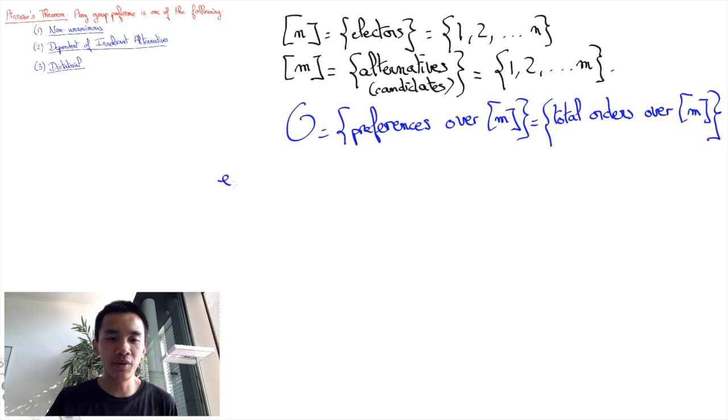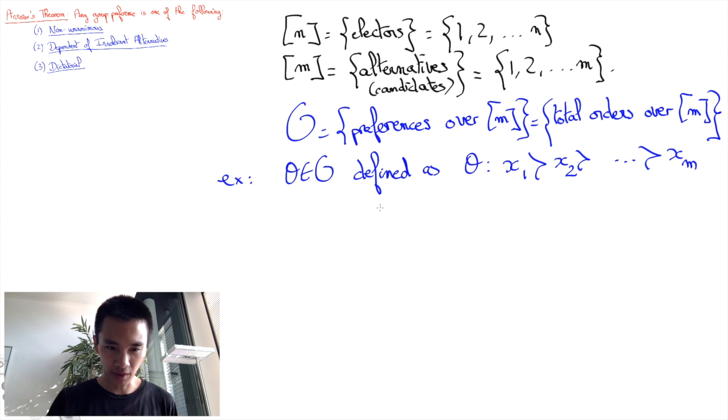Denoting O, the set of order relations, and theta in O a preference, we can fully describe theta by a permutation of the alternatives of the form: Theta prefers x1 to x2 to x3 and so on until xM, where the x1 to xM are all different alternatives of M.